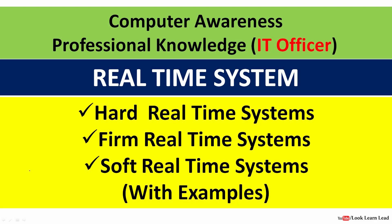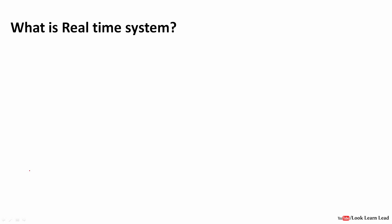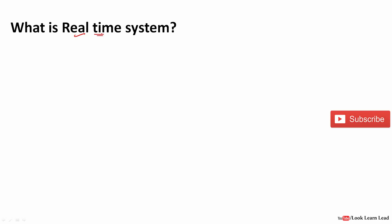Hello everyone. In this video we will be discussing real-time systems and their types. A real-time system is a subsystem which is subjected to real-time constraints — meaning the response must be guaranteed within a specified time. If a program is to be executed, it should be executed within the given time.